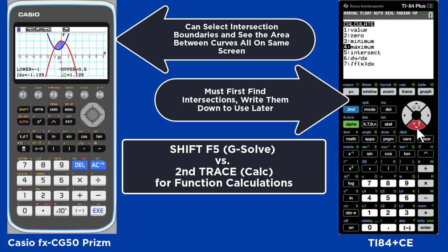On the TI, this is a multi-step process. First, you have to find the intersections of the two curves. You need to make sure that you write them down, since you can't save them on the screen.